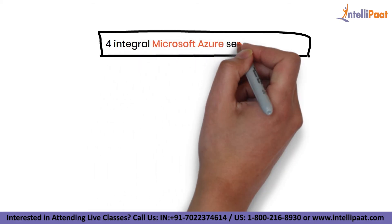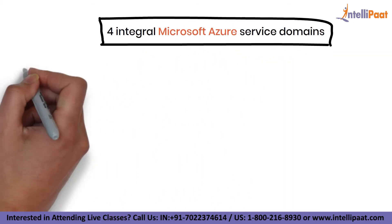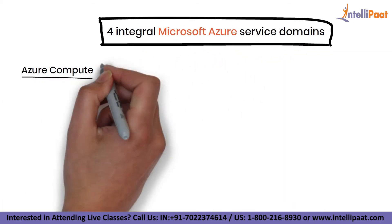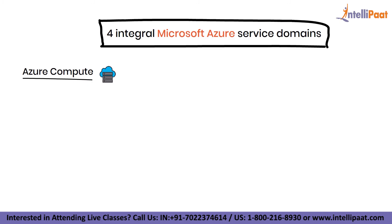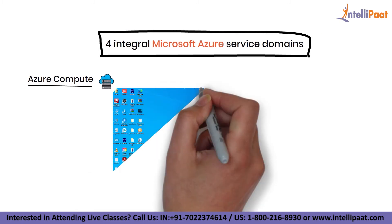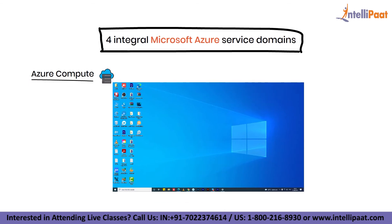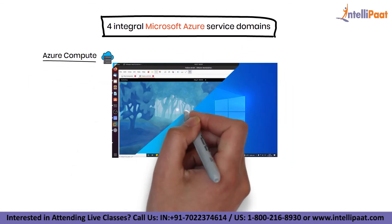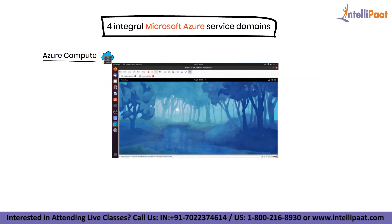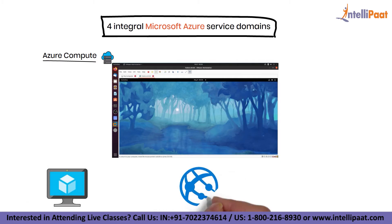There are four integral Microsoft Azure service domains. The first one is Azure Compute. Compute is the most integral domain in Azure, as it brings everything together with Azure Virtual Machines. You can get on-demand, scalable compute resources. Azure Virtual Machines, App Services, and Container Instances are some popular compute services.